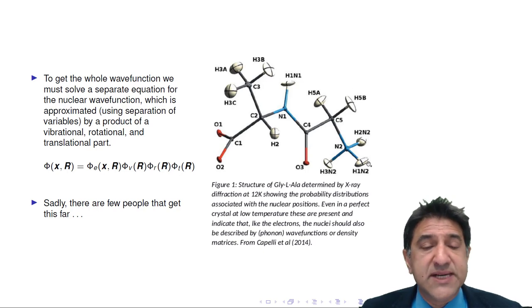So there's a Schrodinger equation for the electronic wave function, called the Born-Oppenheimer equation, and there are separate Schrodinger equations for the vibrations, for the rotations, and the translations. We won't even talk about those, but they're really important. How the nuclei move is important for chemistry.